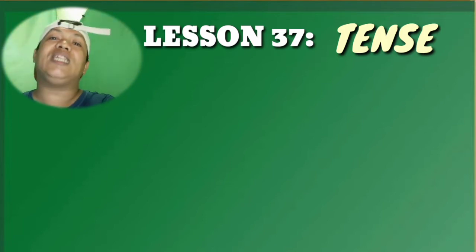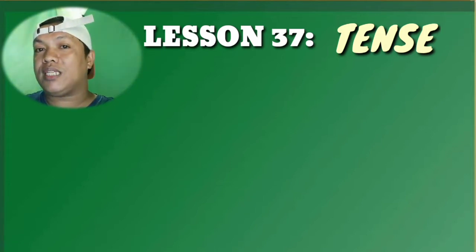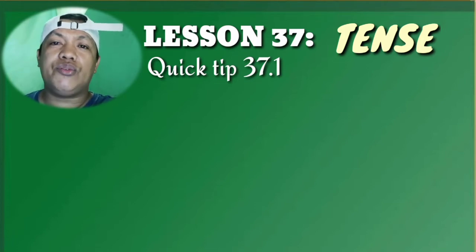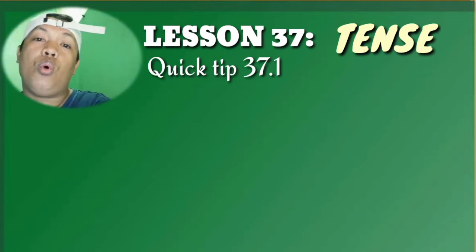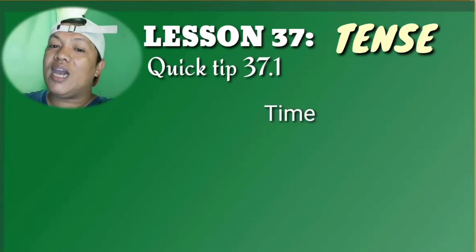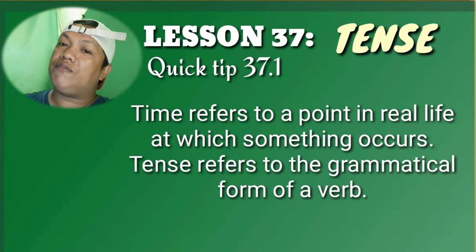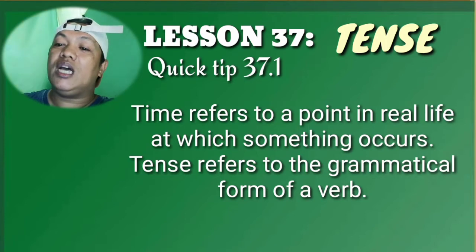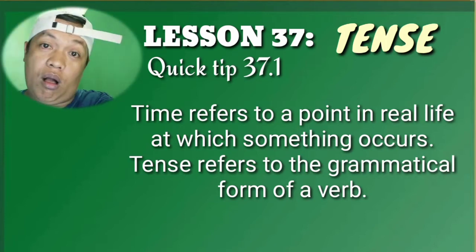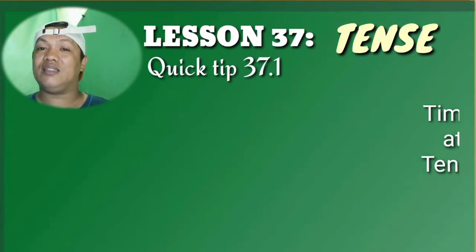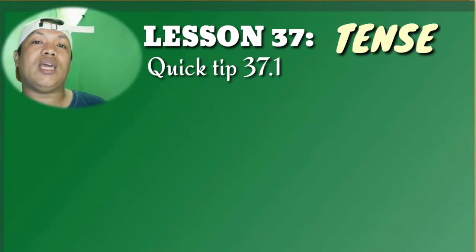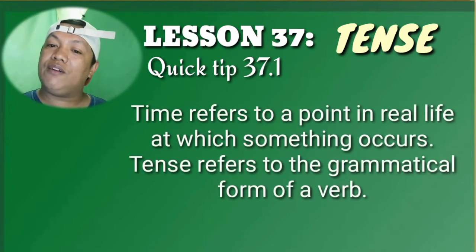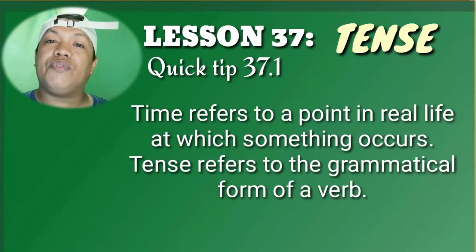For the rest of this lesson, take note of Quick Tip 37.1 in English grammar. Quick Tip 37.1 will tell you that 'time' refers to a point in real life at which something occurs, and 'tense' refers to the grammatical form of the verb. Time refers to a point in life at which something occurs.